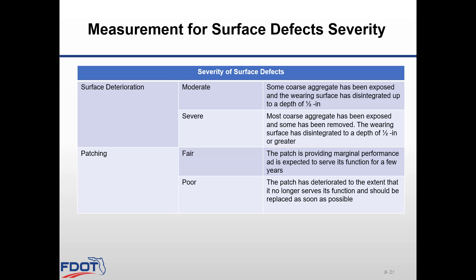This table summarizes the severity of surface defects. The severity of surface deterioration is measured as moderate or severe. Moderate is when some coarse aggregate has been exposed and the wearing surface has disintegrated up to a depth of half an inch. Severe is when most coarse aggregate has been exposed and some has been removed, and the wearing surface has disintegrated to a depth of half an inch or greater. The severity of patching is measured as fair or poor: fair means the patch is providing marginal performance expected to serve its function for a few years; poor means the patch has deteriorated to the extent it no longer serves its function and should be replaced as soon as possible.